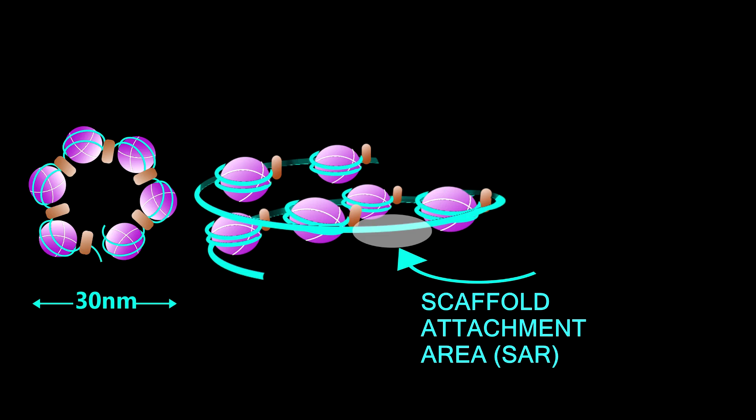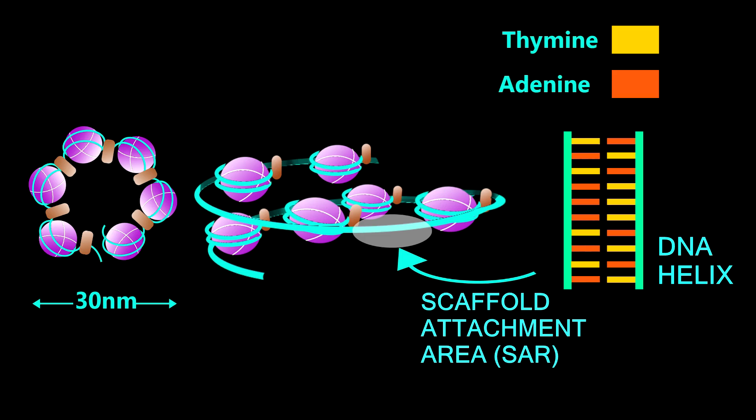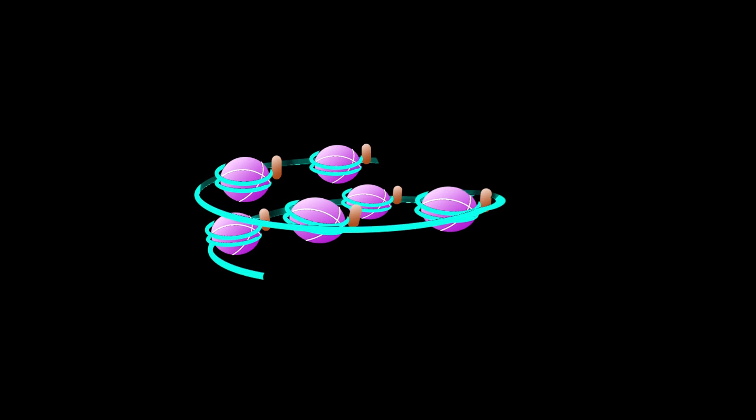SAR is the specific area where adenine and thymine are found in plenty numbers. Scaffold proteins join in SAR region and make a super solenoid model.